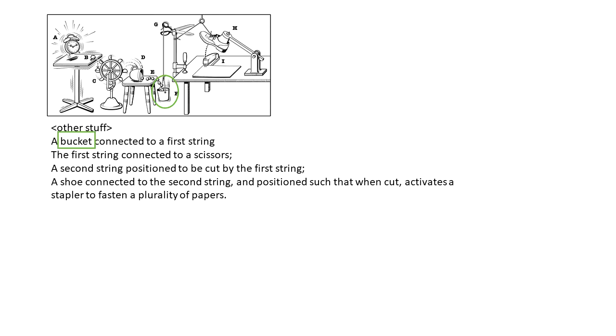So we are showing the ending of our sample claim where we have structural elements. We have the bucket, scissors, shoe, and the stapler. So these are all structural elements that we see in the disclosed device, and I will refer to this style of claiming as a structural claim style.